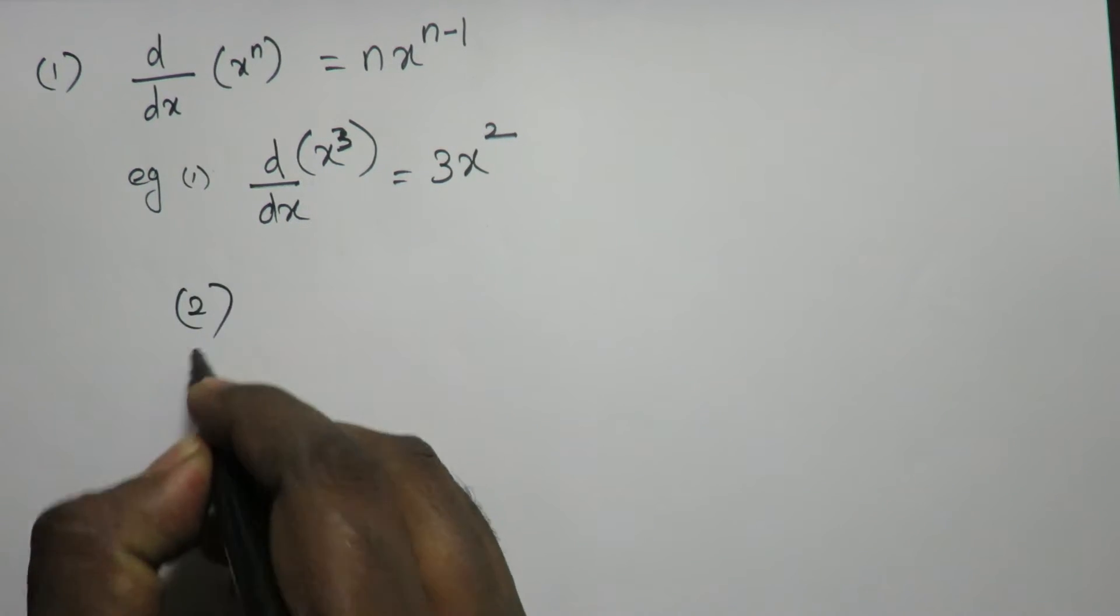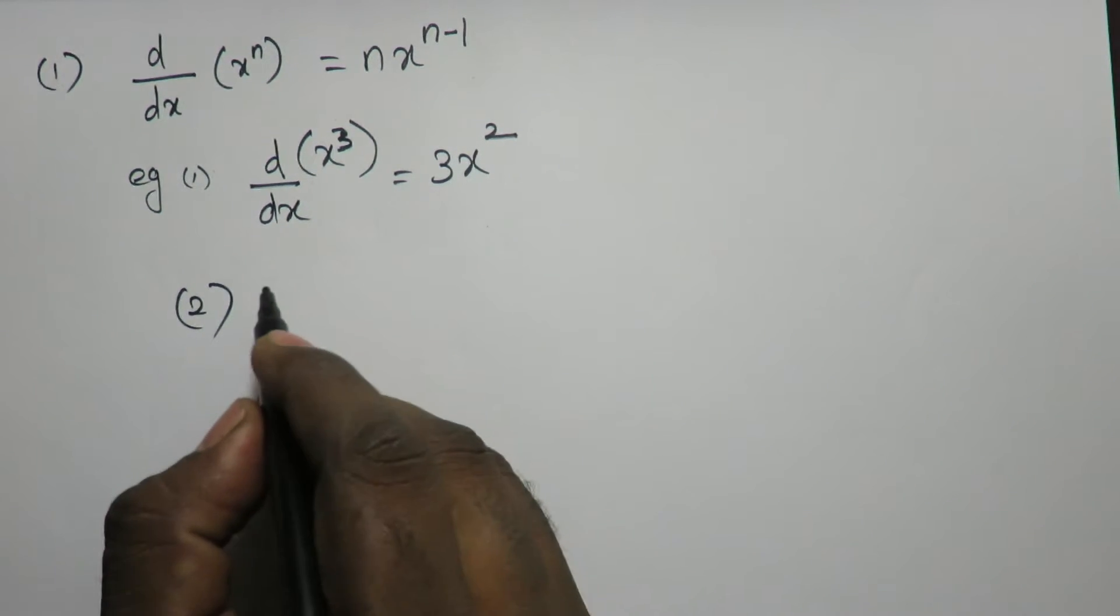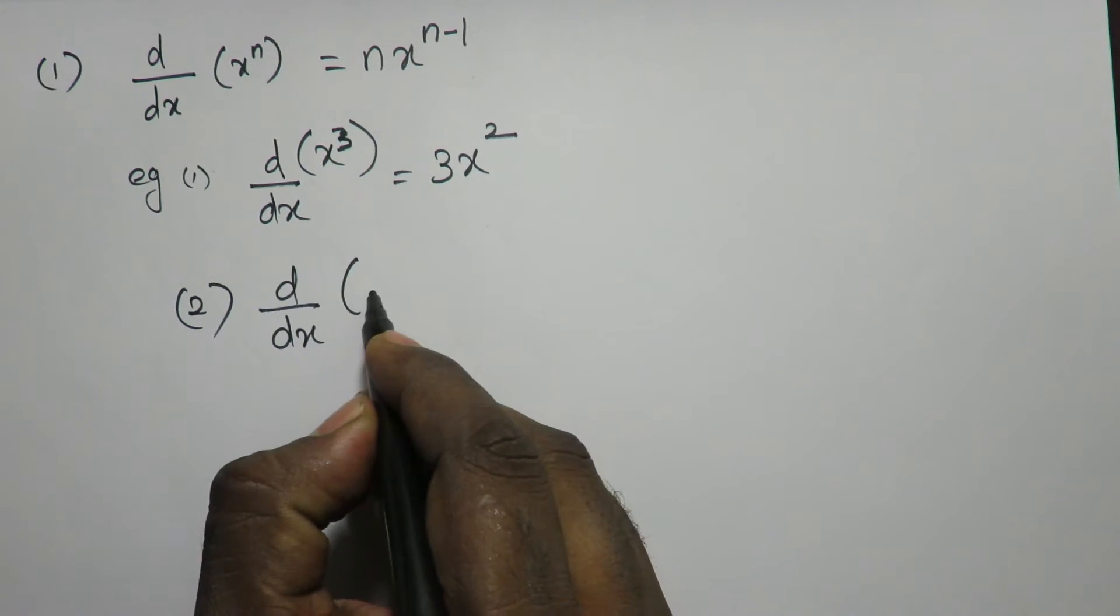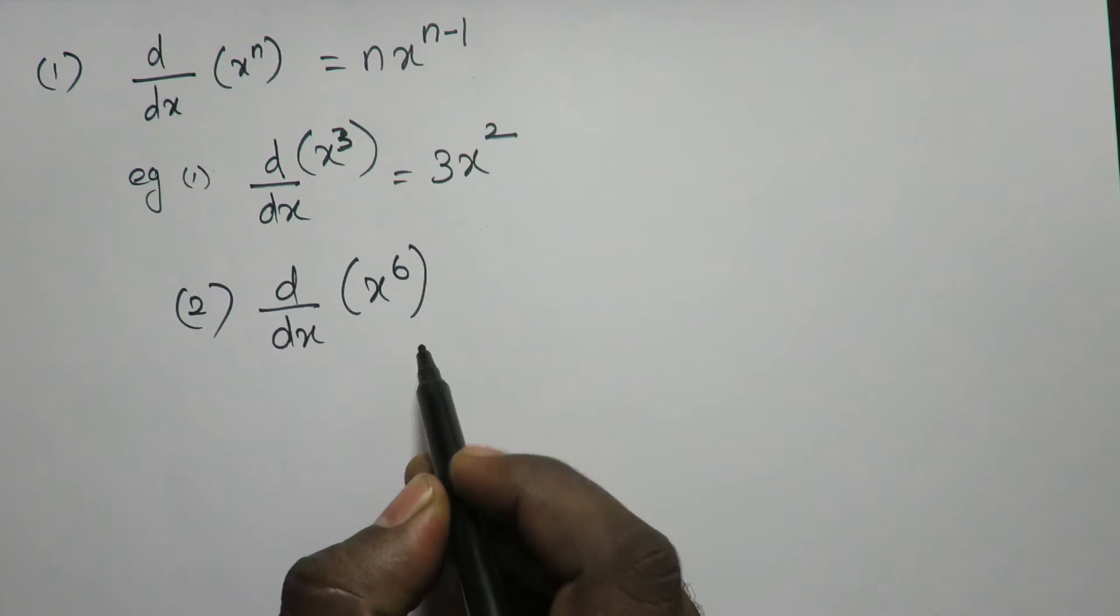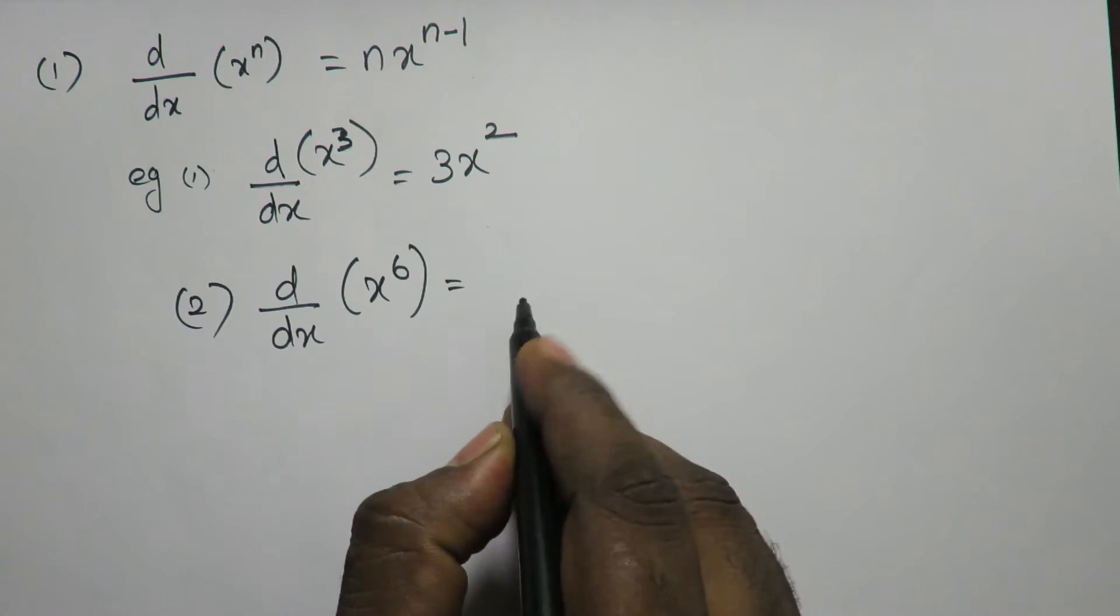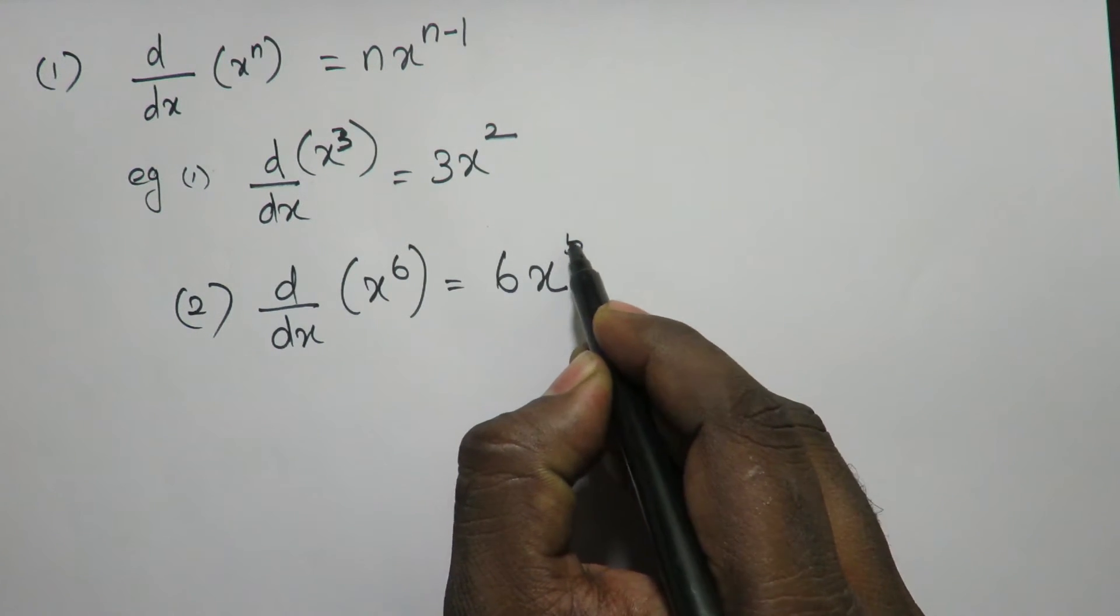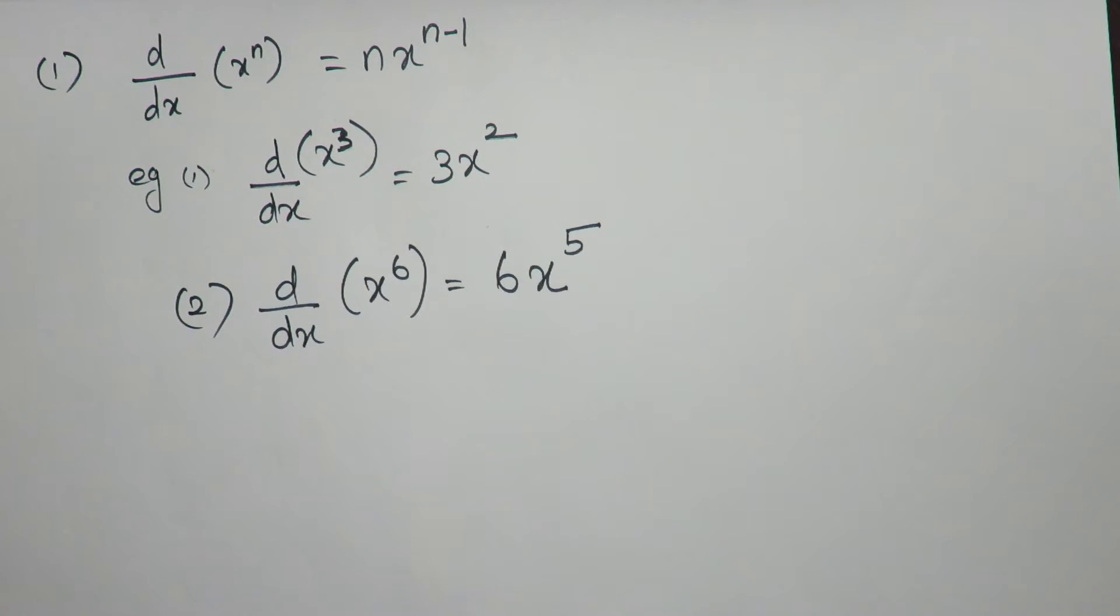Okay, example 2. Differentiate x power 6, which is equal to 6 into x power 6 minus 1 is 5. This is example 2.